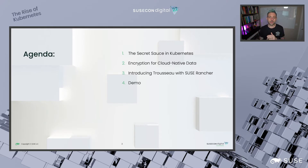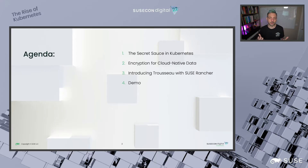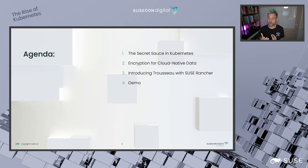Then we're going to take a look at how to encrypt your cloud native data using Kubernetes native paradigms, keeping tools within Kubernetes so you can maintain agnosticity for your toolset across many different environments and clouds. Then we're going to be introducing Trousseau, an open source project that allows you to use any external KMS provider and make it operate the Kubernetes native way. We'll show you how to integrate it with SUSE Rancher and conclude with a demo.